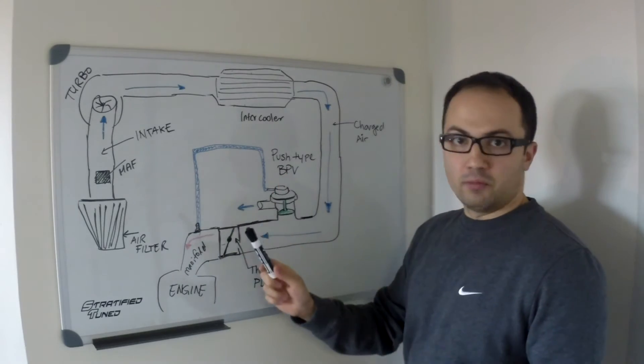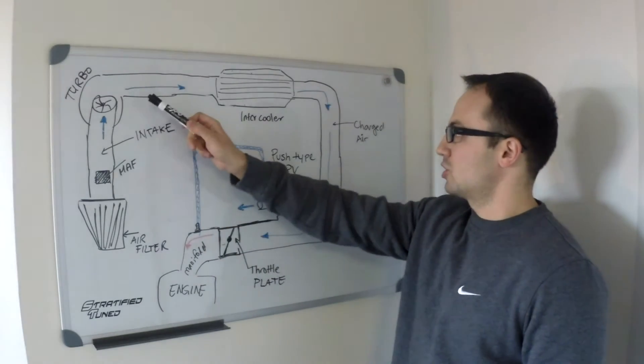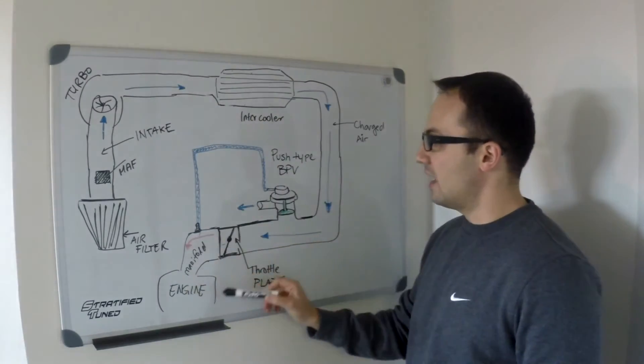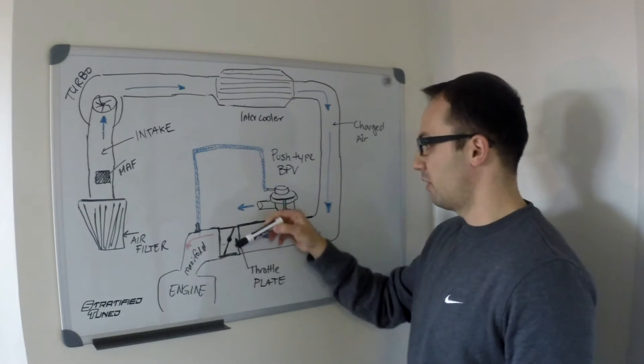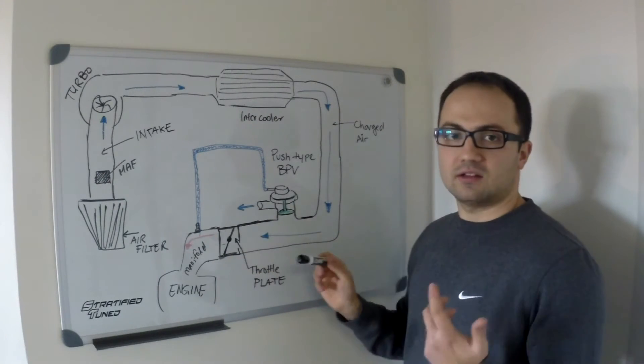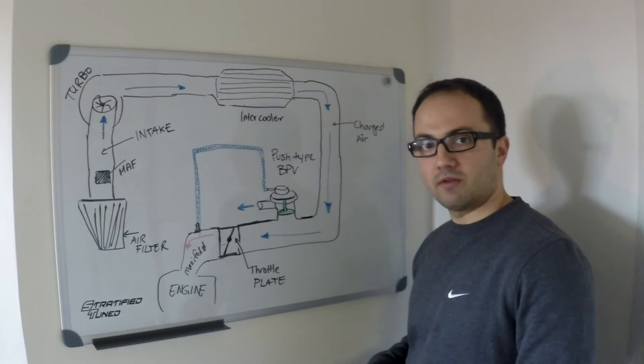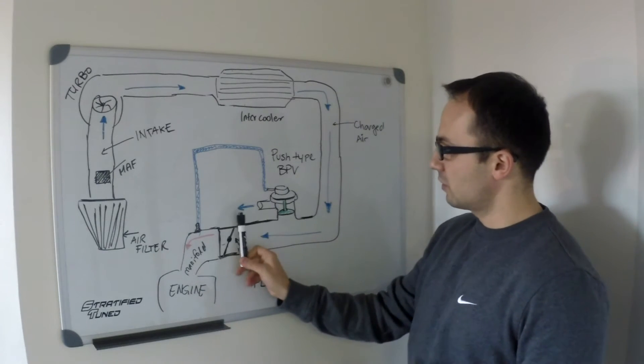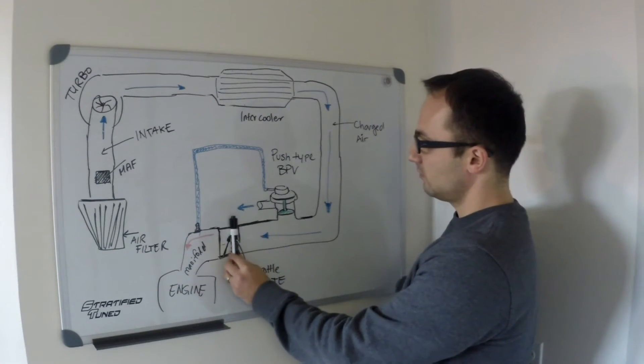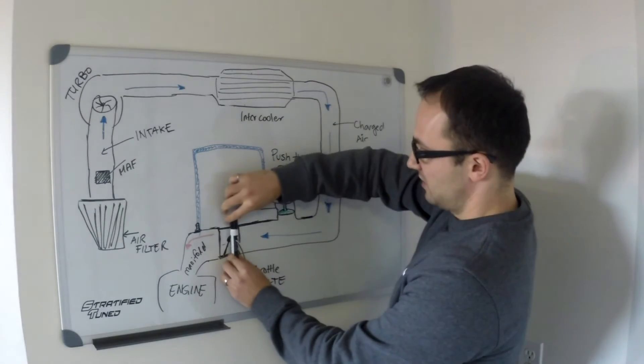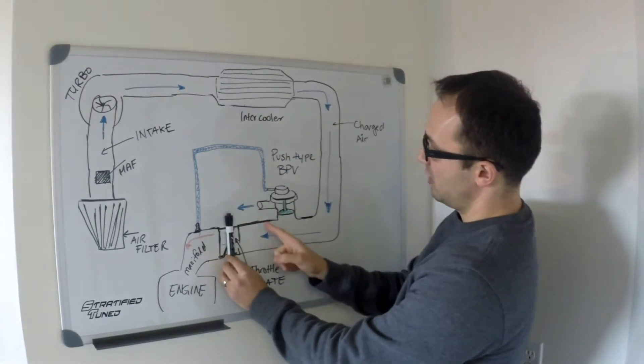When you're under full boost and your turbocharger is pushing a lot of air through here, your engine is consuming that air, your throttle body is open, and your car is generating power. However, as soon as you lift off, this throttle plate closes. When this throttle plate closes, you've now created two separate chambers.